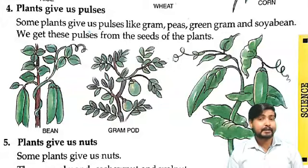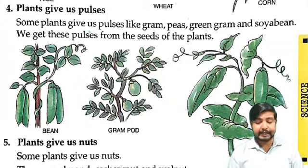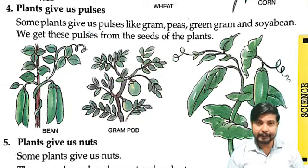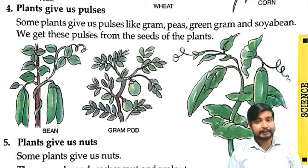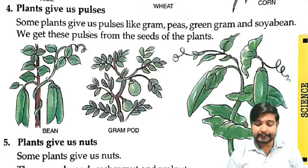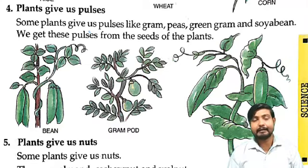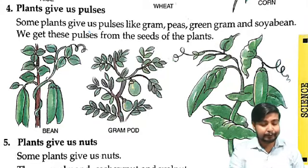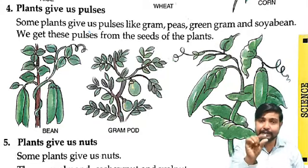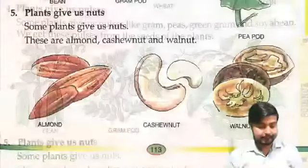Then plants give us pulses. Some plants give us pulses like gram, pea, green gram, soya bean. Aur kai sare aise plants hai jo hamein pulses dete hai jaise ki gram, pea, green gram, soya bean, theek? We get those pulses from the seeds of the plant. Aur yeh pulses hum in plants ke seed se paate hain.